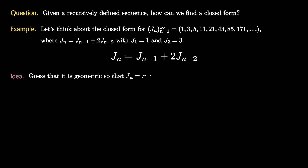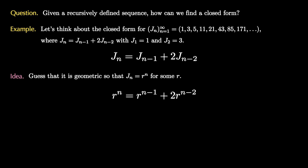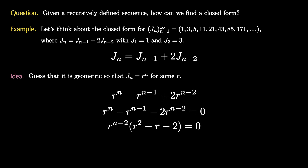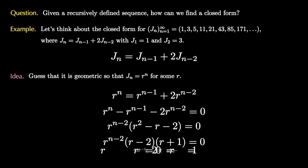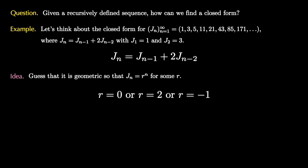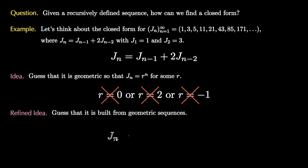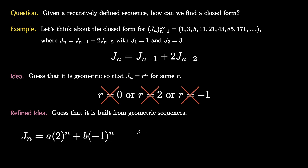Because a geometric sequence almost worked, we might guess that j_n is of the form r to the n for some r. Plugging r in, we subtract all terms to the left and factor out r to the n minus 2, then factor the quantity r squared minus r minus 2 into r minus 2 times r plus 1. This equation means r is 0, r is 2, or r is negative 1. We can see r equals 0 leads to the zero sequence, r equals 2 doesn't satisfy the initial conditions, and r equals negative 1 will not work as well.